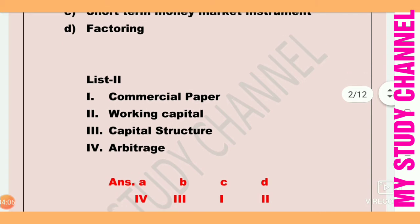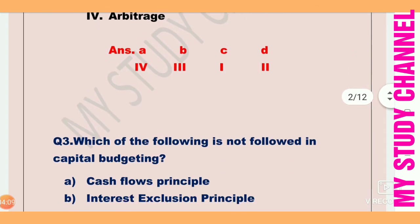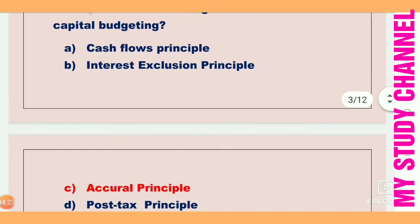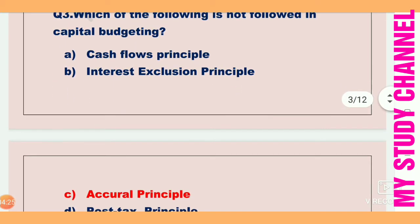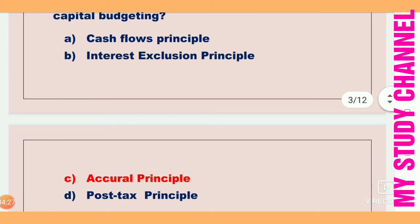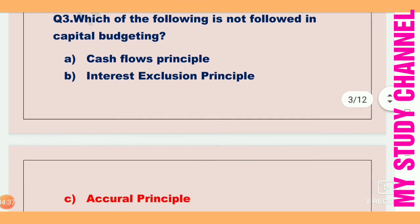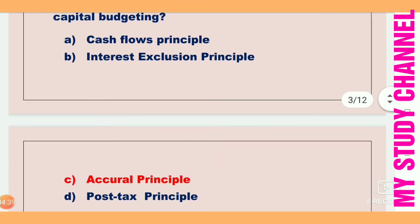Next question: Which of the following is not followed in capital budgeting? Option A is cash flows principle, B is interest exclusion principle, C is accrual principle, and D is post-tax principle. Option C is the right answer — accrual principle is not followed in capital budgeting.